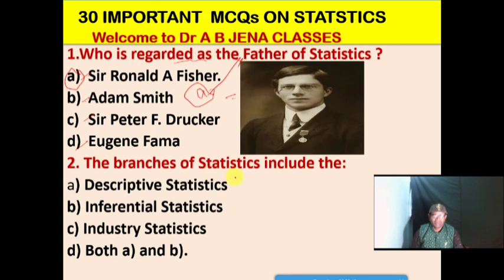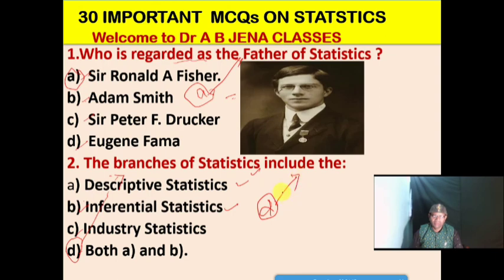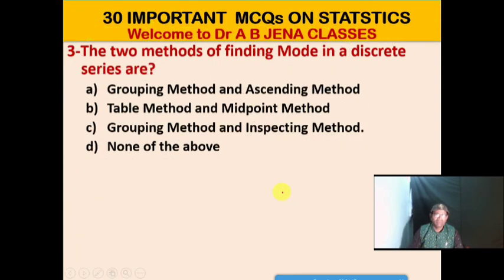Next MCQ: The branches of statistics include what? A. Descriptive statistics. B. Inferential statistics. C. Industrial statistics. D. Both A and B. D is the right option. The branches of statistics include descriptive statistics as well as inferential statistics.